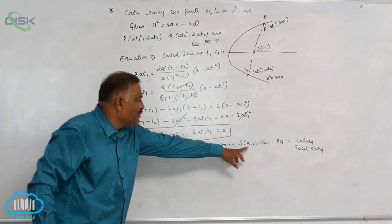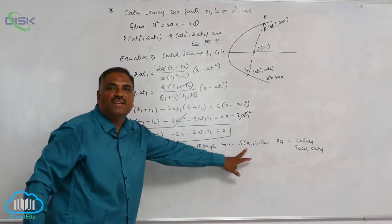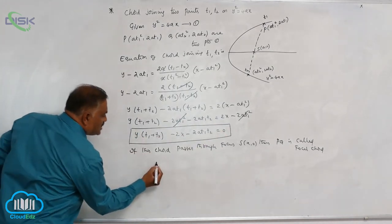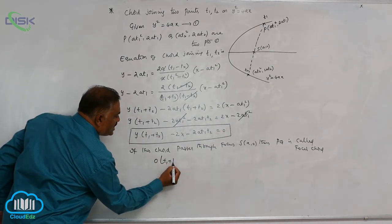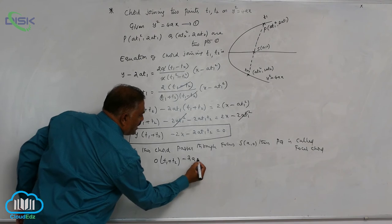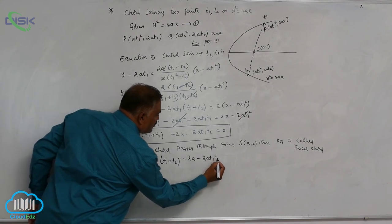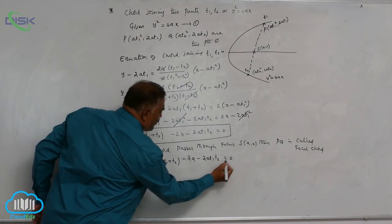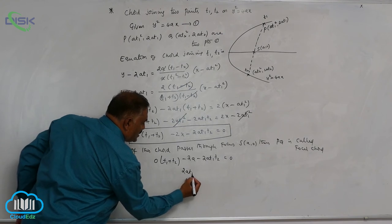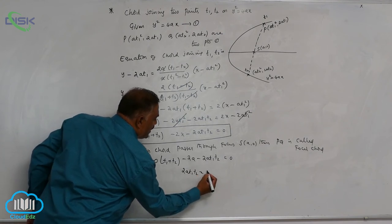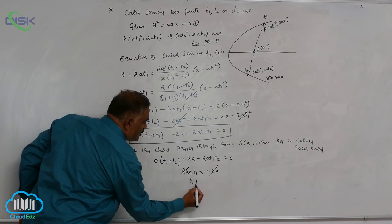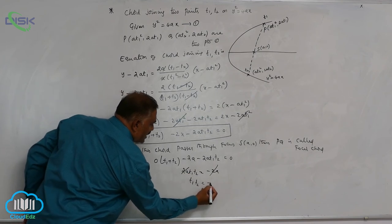To find the condition for a focal chord, substitute x = a and y = 0 into the chord equation: 0·(t1 + t2) − 2a·t1·t2 = 0, which gives 2a·t1·t2 = −2a. After cancelling 2a, we get t1·t2 = −1. So the condition for a focal chord is t1·t2 = −1.